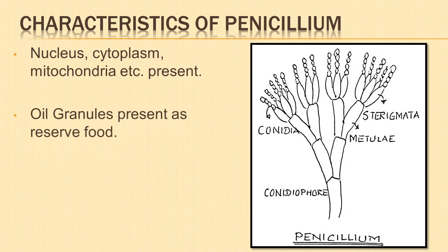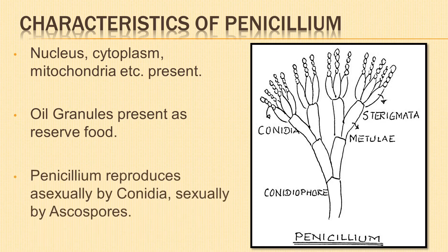Oil granules are present as reserved food. Penicillium reproduces asexually by conidiospores, which are produced exogenously. Sexual reproduction is by the formation of ascospores.